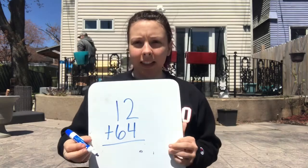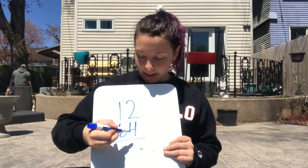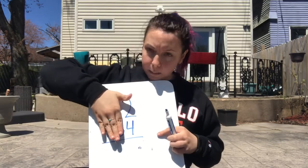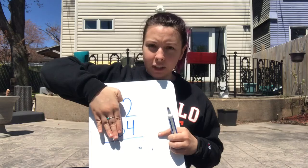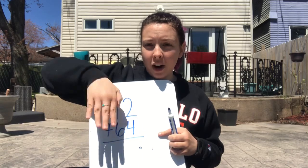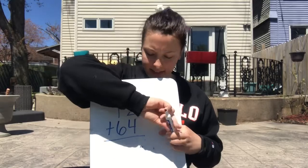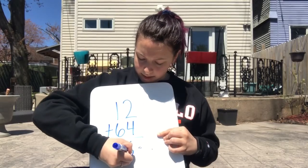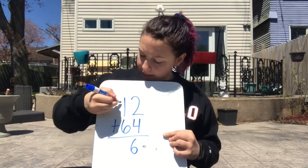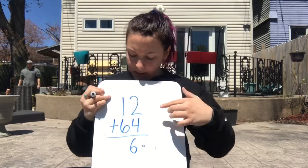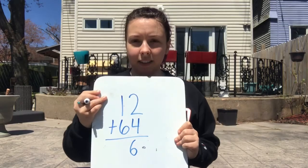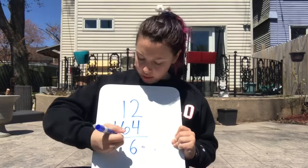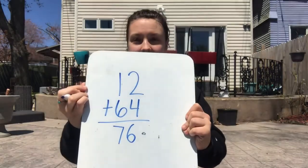Our ones places should always stand on each other's shoulders and our tens places should always stack right on top of each other too. Whenever we're adding like this, we should always, always, always start with the ones place. So we're going to cover up the tens place right now and look at the ones place. We have two plus four — how much is two plus four? Put four in your head and count two more: four, five, six. So far we have six in our ones place, but we're not done just yet because we still need to add the tens together. Now I have one ten plus six tens — how much is one ten plus six tens? That's seven tens, so our answer is seventy-six.